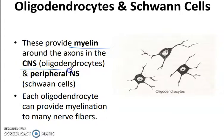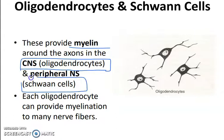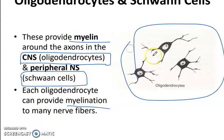The cells providing myelin sheath in the CNS are called oligodendrocytes, and outside the central nervous system they are called Schwann cells. They provide myelination.